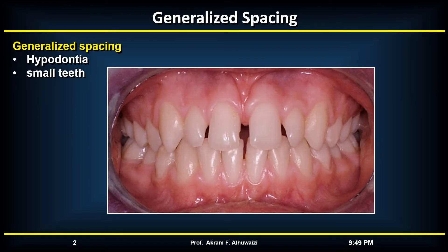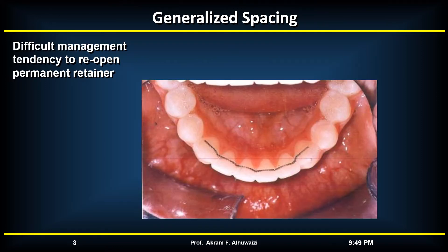Generalized spacing is not common and is due to either hypodontia or small teeth in well-developed arches. Orthodontic management of generalized spacing is frequently difficult, as there is usually a tendency for the spaces to reopen unless a permanent retainer is done.